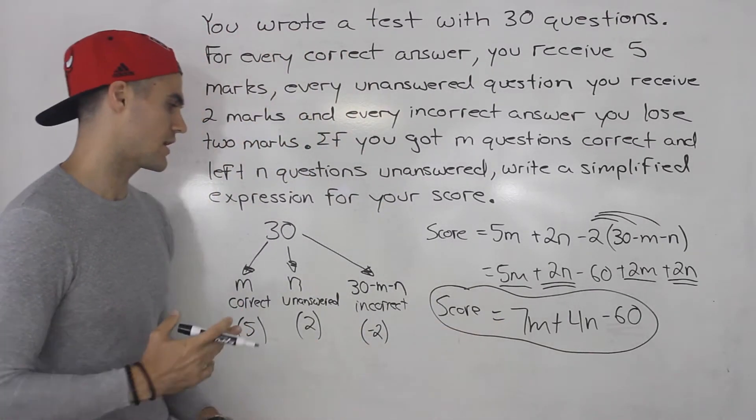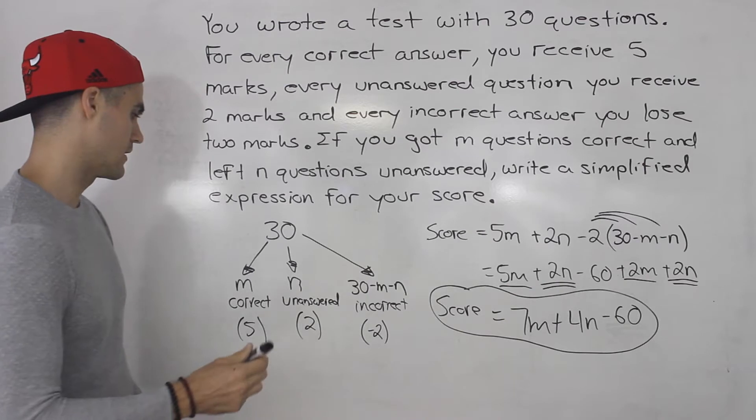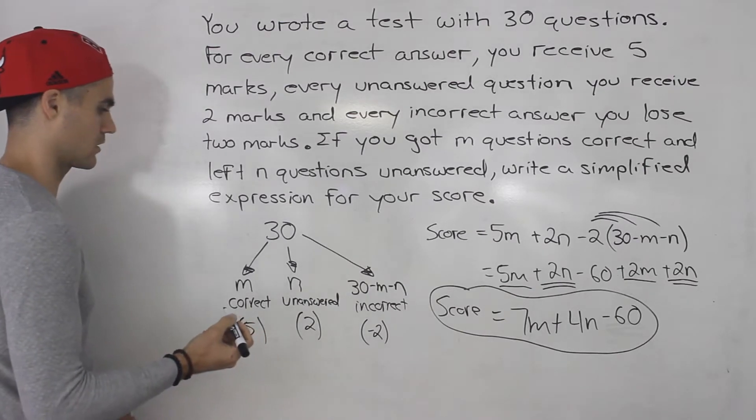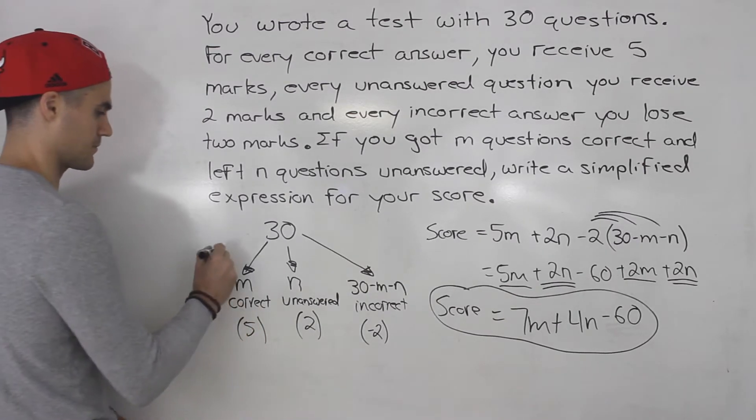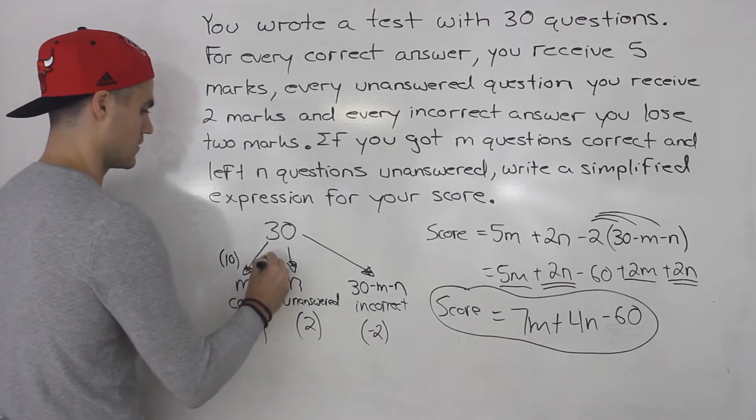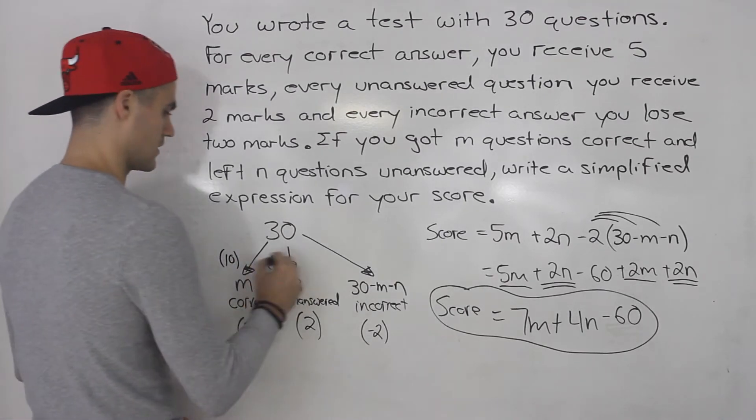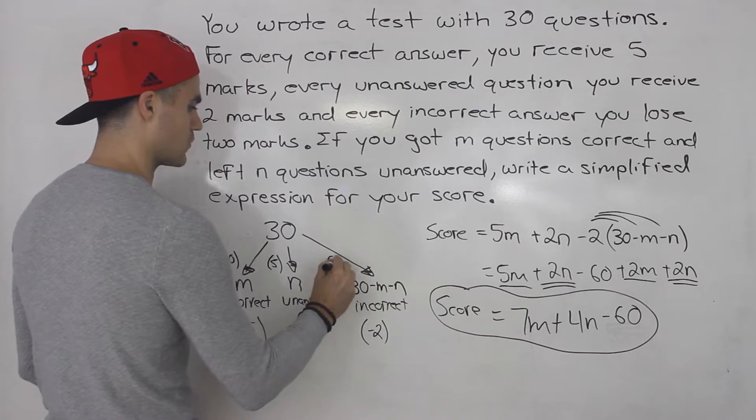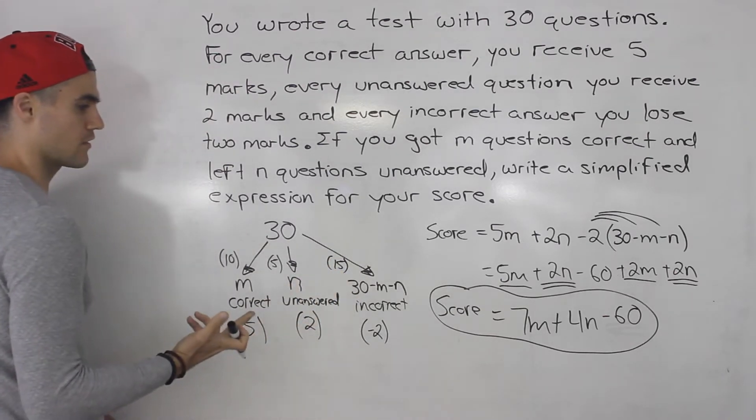And you can actually test it. So you can actually pick numbers. Let's say we go with our previous example. We got 10 correct. We got 5 unanswered. So that means that 15 were incorrect, the remaining of the 30.